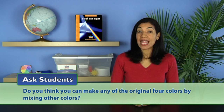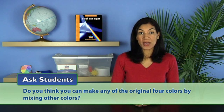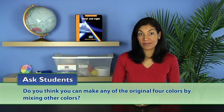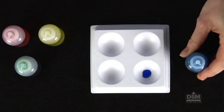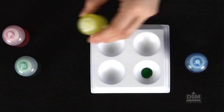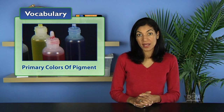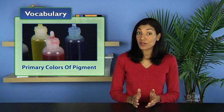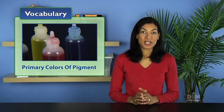Lastly, ask students, do you think you can make any of the original four colors by mixing other colors? Students should understand that only green can be made by combining blue and yellow. Explain that red, blue, and yellow are referred to as the primary colors of pigment because they can be combined in different amounts to form any color in the spectrum. But they themselves cannot be formed by combining other colors.